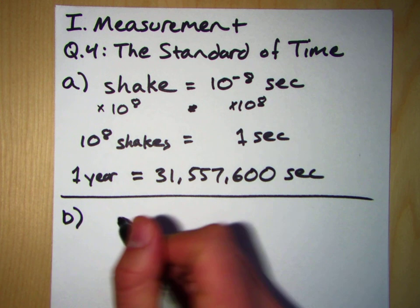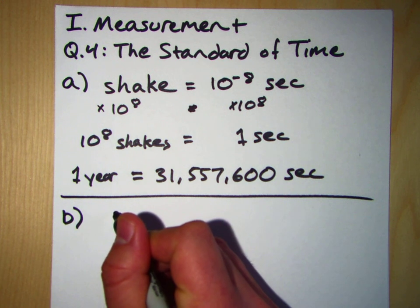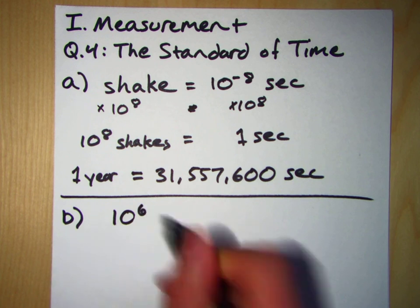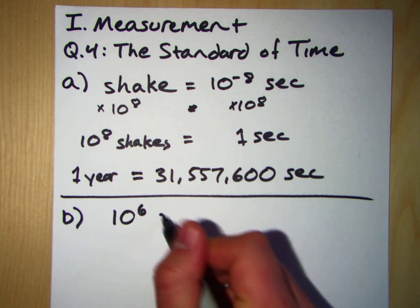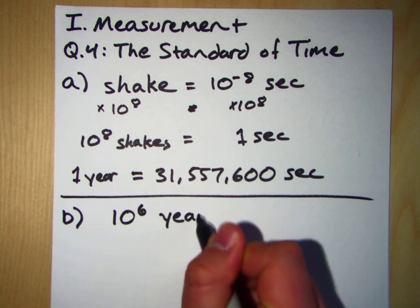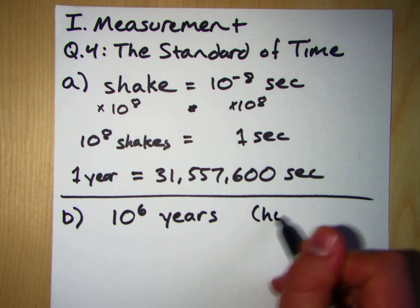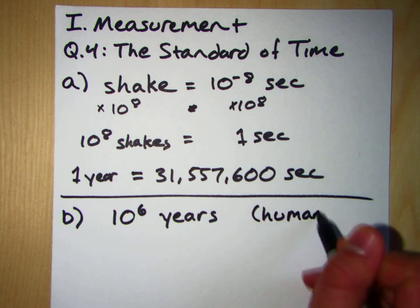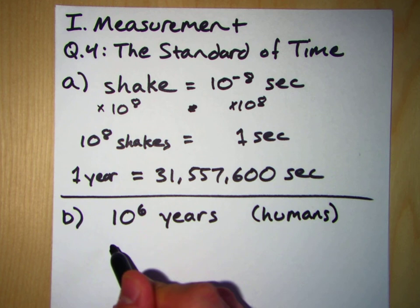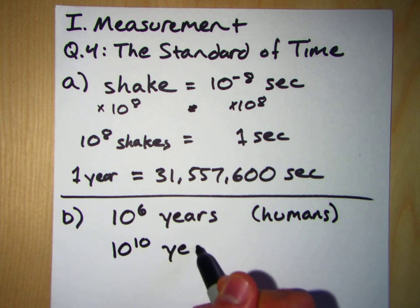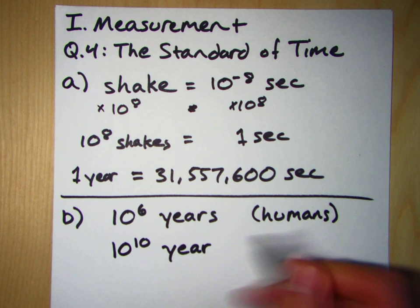Okay, so humans have been around for more than this, but on the order of 10 to the 6th years. So about a million years. The universe has been around a lot longer, on the order of 10 to the 10 years.